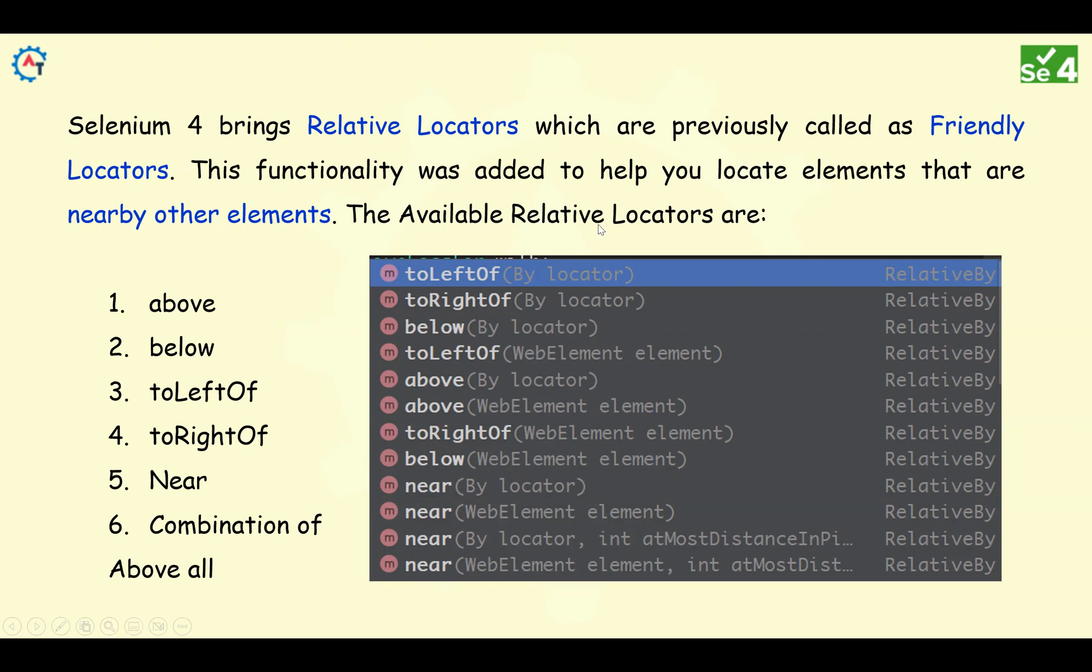The available relative locators are: above, below, toLeftOf, toRightOf, near, and a combination of all these five. We have five methods, and you can use combinations of all these things as well.